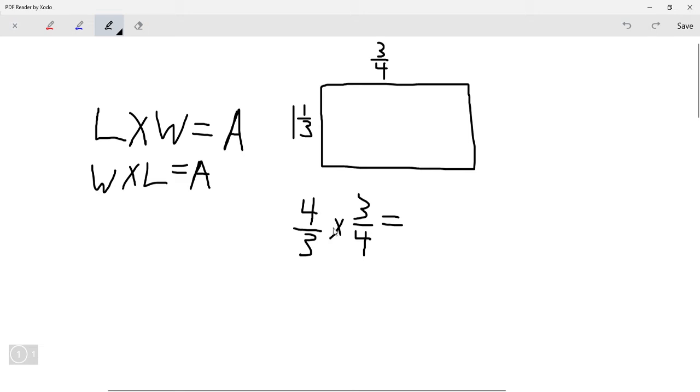Now we have 4 times 3 equals 12, and 3 times 4 equals 12. So we have 12 over 12. So that means the area of this rectangle would be 12 over 12 units, which is just 1. And technically, if this was, let's just say these were centimeters, it would actually be 1 centimeter squared, because area is squared.